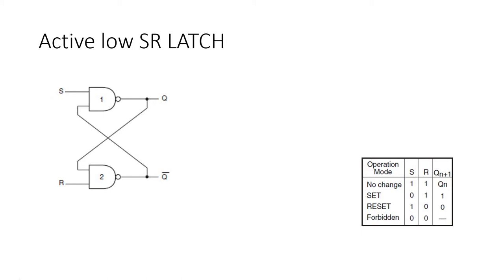So we called that the forbidden region — we should not operate our SR latch in that region. Now the problem with this circuit is that when we say 'set' — meaning making the output 1 — but when making S=1, Q(N+1) actually becomes 0. Similarly, when we say 'reset' (clear), but when R=1 and S=0, Q(N+1) becomes 1. So reset means 1 and set means 0, which should not happen.